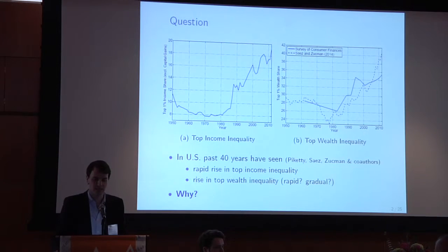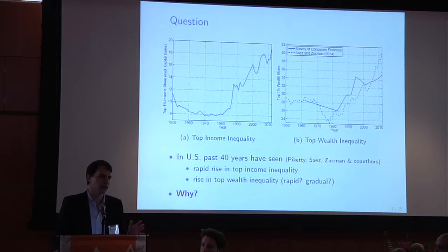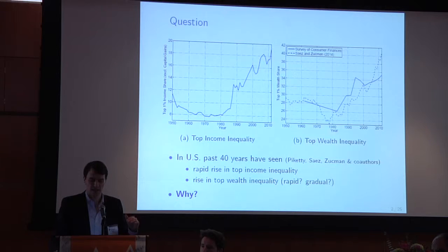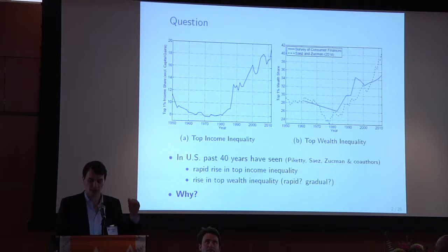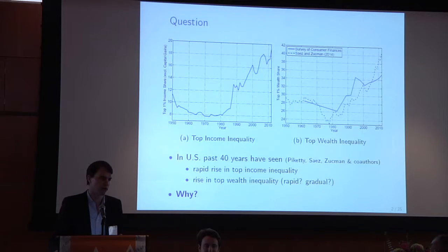On the right hand side is a similar graph for wealth — the top 1% wealth share. The facts are a lot murkier because the data is a lot worse. I'm showing two data series: the Survey of Consumer Finances in solid, which suggests a relatively gradual rise from 27% to 34% today, and the data series from Gabriel's paper, which suggests a much more dramatic rise in top wealth inequality.